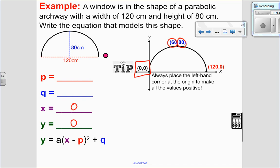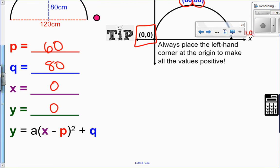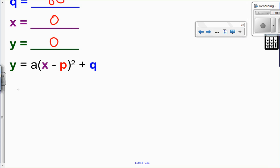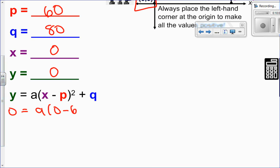So that's a great little tip of placing the origin at the left-hand corner. The other nice thing is I can use 0 and 0 as one of my points, which makes my calculations a lot easier as well. So the way that I've drawn it, my vertex is at 60 and 80, and I want to solve for my a value. So I have y, which is 0, equals a times x, which is 0, minus p, which is 60, squared, plus q, which is 80. So I have 0, equals a times, 0, take away 60, is negative 60, plus 80.